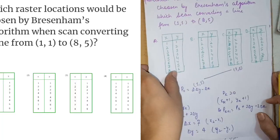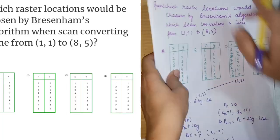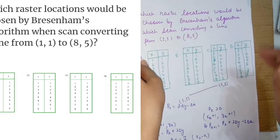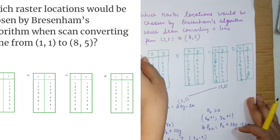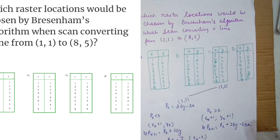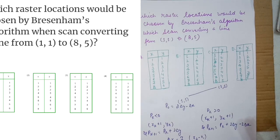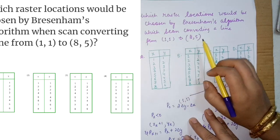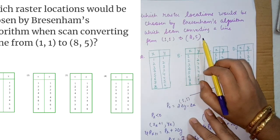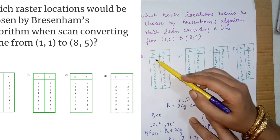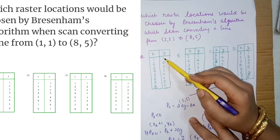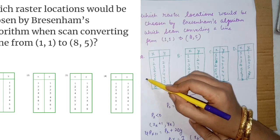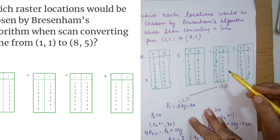Now I am going to share a short trick. Let's see — in Bresenham's line algorithm, the line starts at (1,1) and ends at (8,5). First, check if (1,1) and (8,5) are present in the options. If any option doesn't contain these endpoints, that option is wrong.